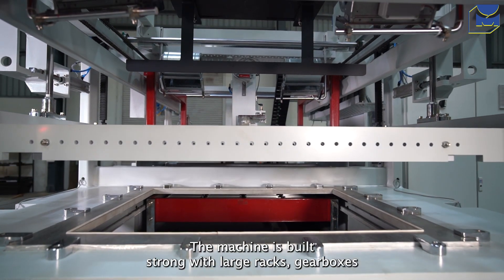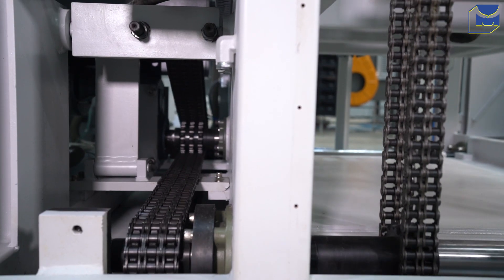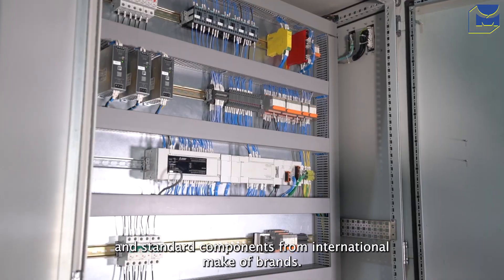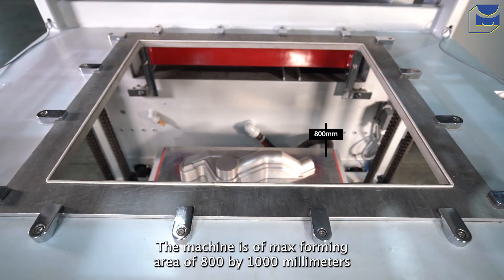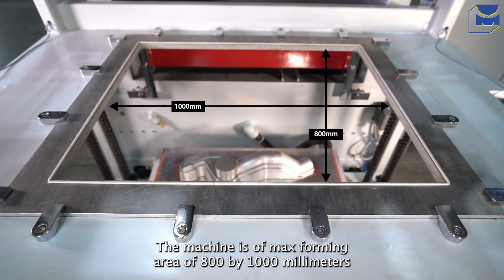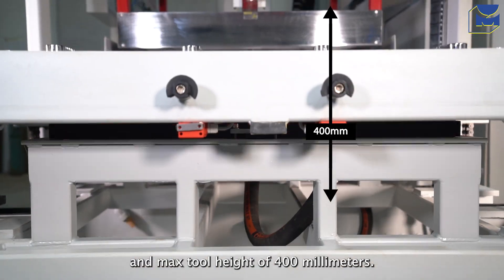The machine is built strong with large racks, gearboxes, and standard components from international make brands. The machine has a max forming area of 800 by 1000 millimeters and max tool height of 400 millimeters.